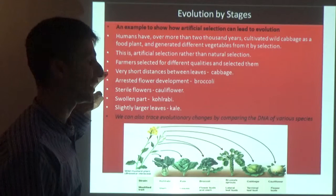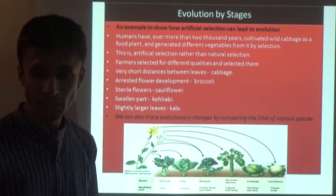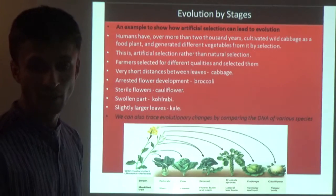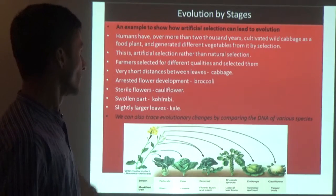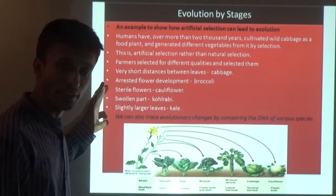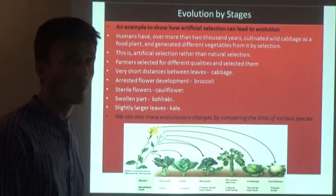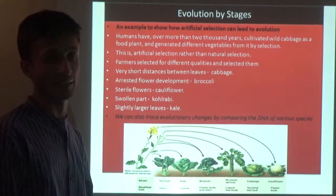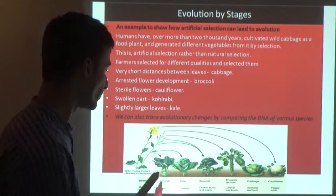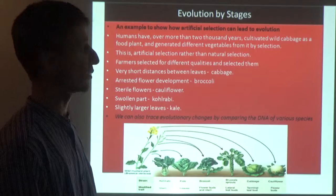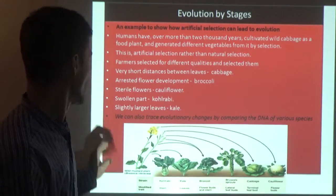For example, selecting for very short distance between leaves led to cabbage development; instant flower development gave broccoli; sterile flowers gave cauliflower; swollen parts gave kohlrabi; slightly larger leaves also emerged. Farmers selected different qualities and interbred them so that those species could be obtained more and more - and slowly, as variations accumulated, altogether different species were formed from wild cabbage. This is an example of artificial selection.